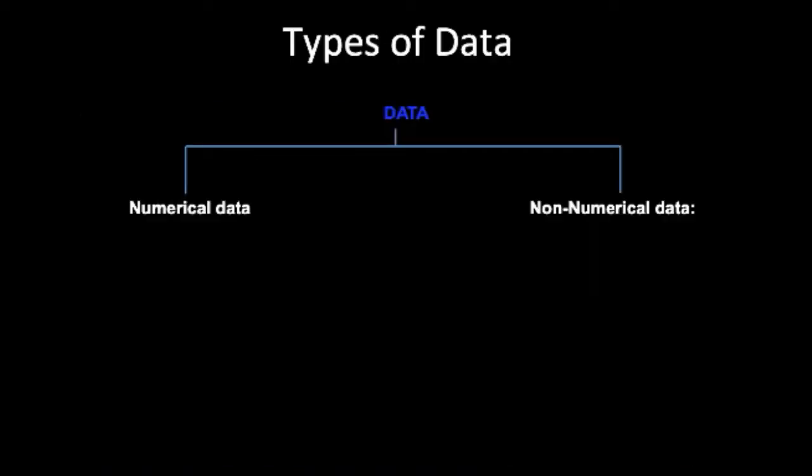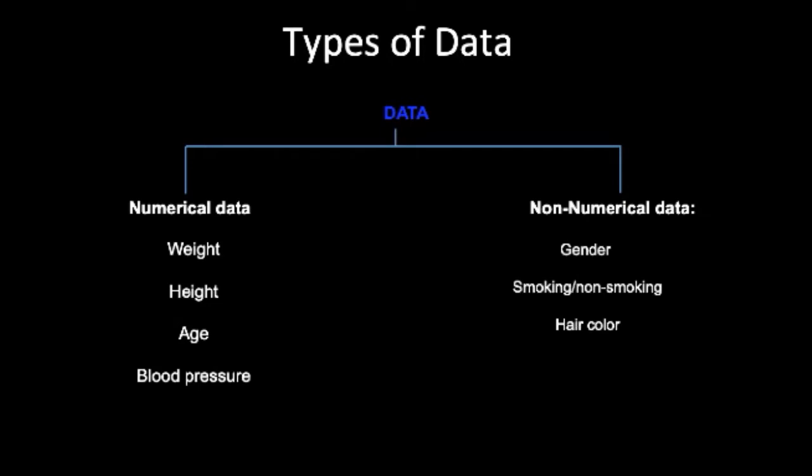We have two types of data: numerical data and non-numerical data. Examples of numerical data include weight, height, age, and blood pressure. Examples of non-numerical data include gender, smoking/non-smoking, and hair color.